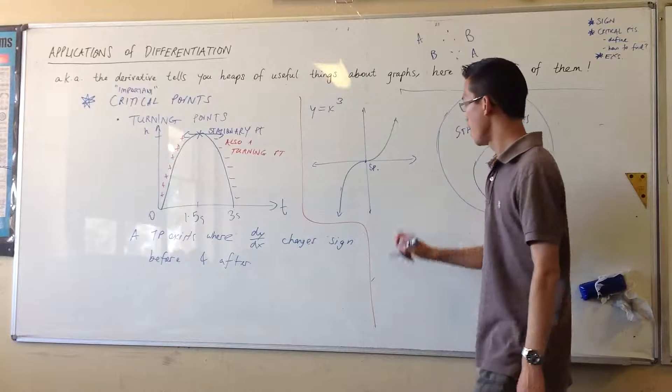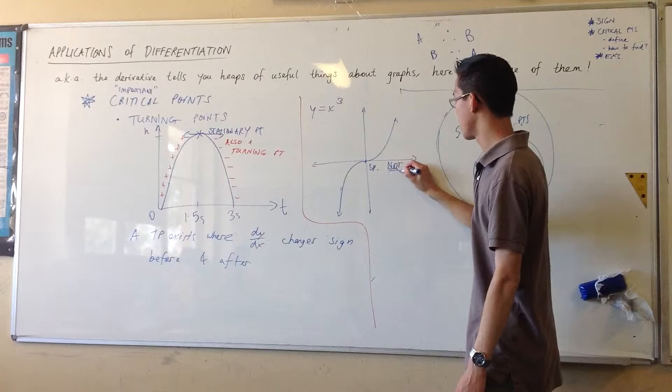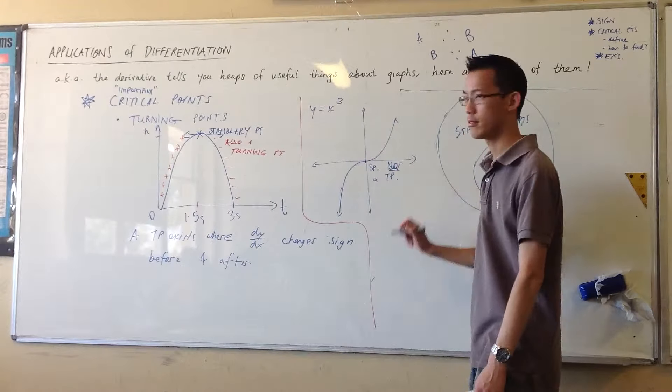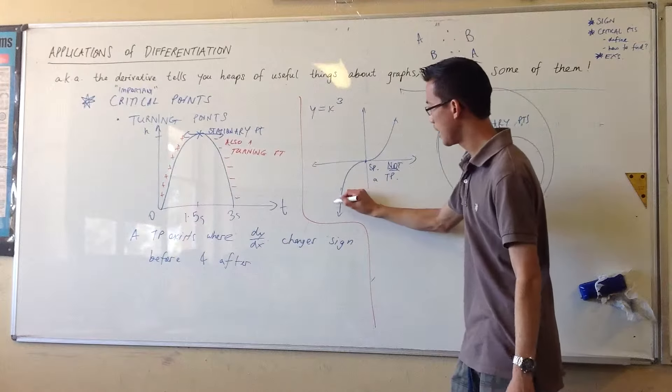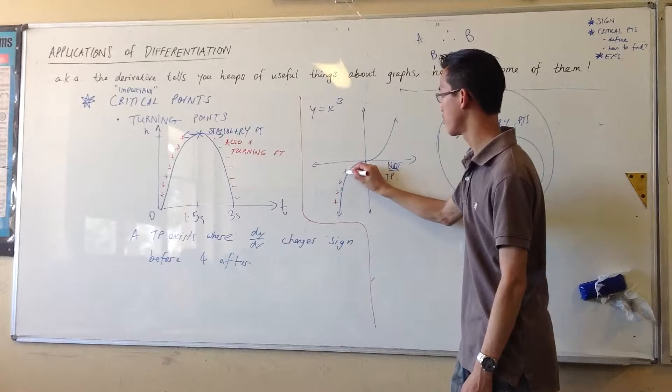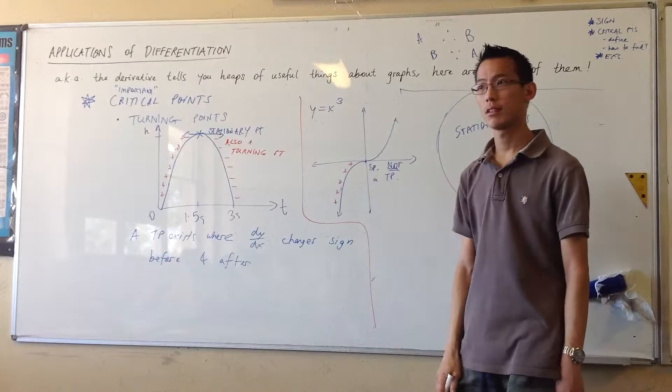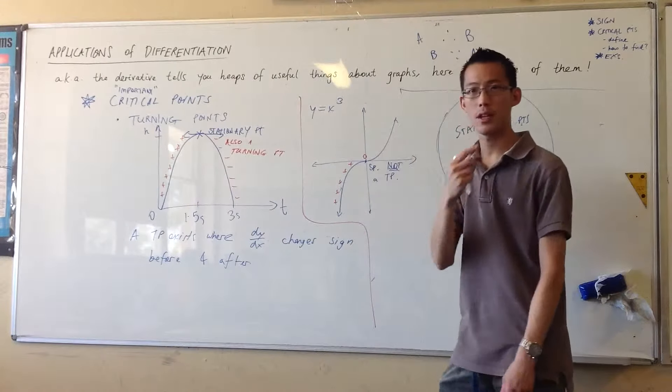But it is not a turning point. Because, again, I'm going to do the same thing I did over here. Let's have a look at the gradient. Here, it's increasing, so it's positive all the way on the left. You get to this one point where the derivative is negative.